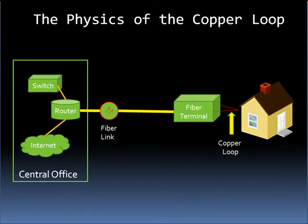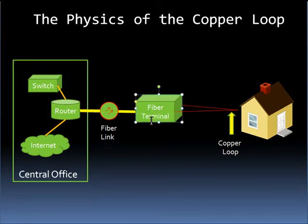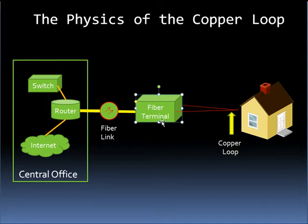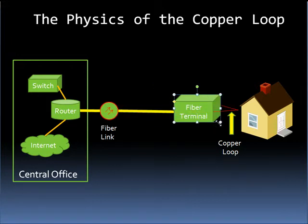Consider the architecture shown, where a fiber terminal terminates a fiber originating from a central office and then feeds a copper loop to a subscriber's home. The fiber-optic link shown in this diagram is never a bottleneck for bandwidth. The physics of the copper loop, however, does not allow this medium to carry as much bandwidth as the fiber-optic line. As the fiber terminal moves closer or farther away from the customer home, the length of the copper loop is lengthened and shortened accordingly. As the loop gets larger, the resistance in the copper wires becomes larger, therefore making current drive more difficult, thus slowing the available transmission speed. Conversely, as the fiber terminal gets closer to the customer's home, the loop length gets shorter and greater bandwidth is possible.